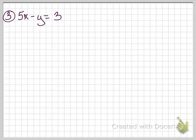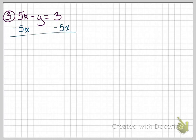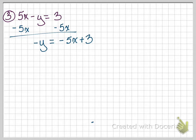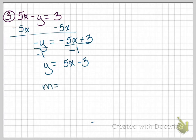Number three asks us to graph using the slope and the y-intercept. First, we solve for y by moving the 5x over. Be careful not to drop the negative: negative y equals negative 5x plus 3. Dividing everything by negative 1, we get y equals 5x minus 3. The slope is 5 and the y-intercept is negative 3.